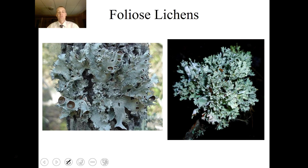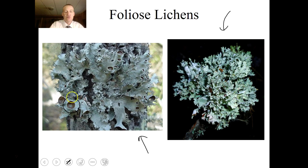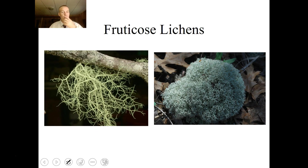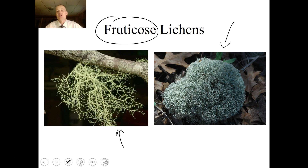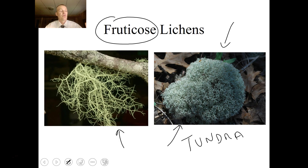Foliose lichens are found on the surface and bark of trees and are more leaf-like. Fruticose lichens are found attached to trees or on the ground and are really important in habitats like the tundra, where they form the base of the food chain. Caribou eat them, and wolves eat caribou. Lichens also often have little communities living inside them — soak a lichen in water and you might find paramecia, nematode worms, gastrotrichs, and even tardigrades, or water bears, which are extreme animals that can survive many harsh environments.